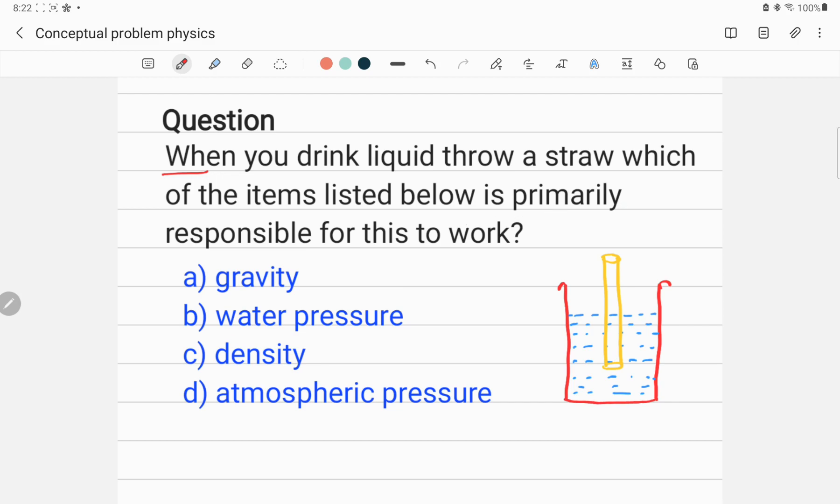The question is asking, for example, you have a glass of water or some fluid. Here is the water inside and you are trying to drink this fluid, this water, through a straw. This is a straw. So what is the primary reason responsible to raise the water level here?